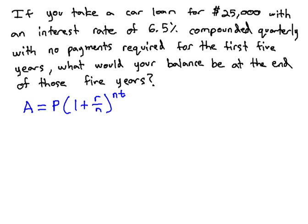Plugging in what we know, we're looking for the final amount. P is the principal or how much the loan starts out for—it starts out as a $25,000 loan. Times 1 plus r, where r is the interest rate, 6.5. 6.5 written as a decimal, remember, means we have to move the decimal twice, so that would be 0.065.